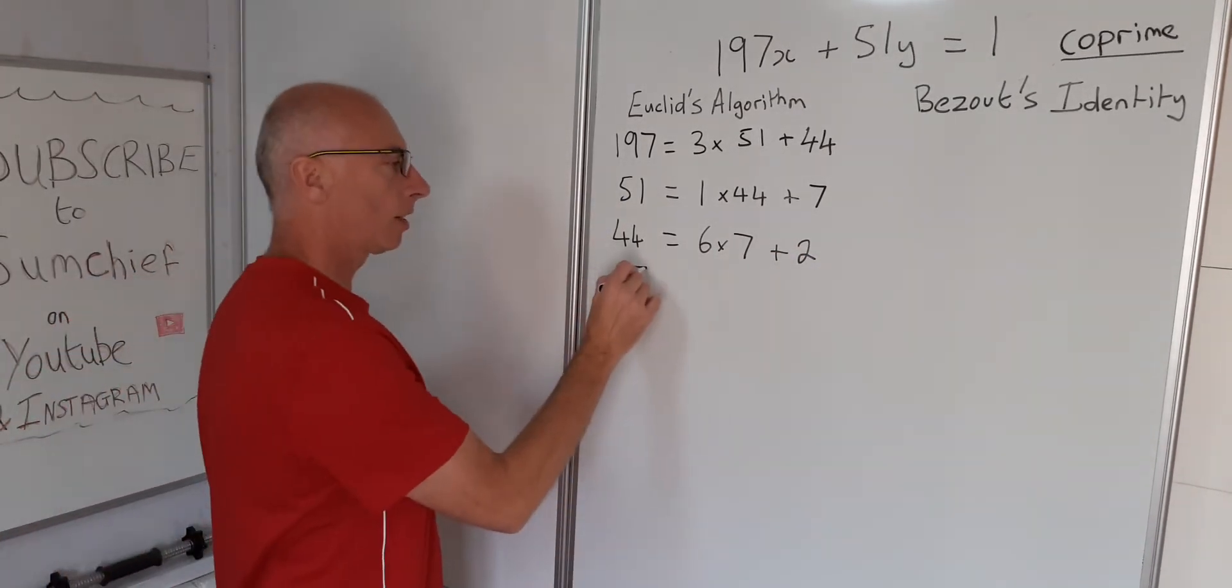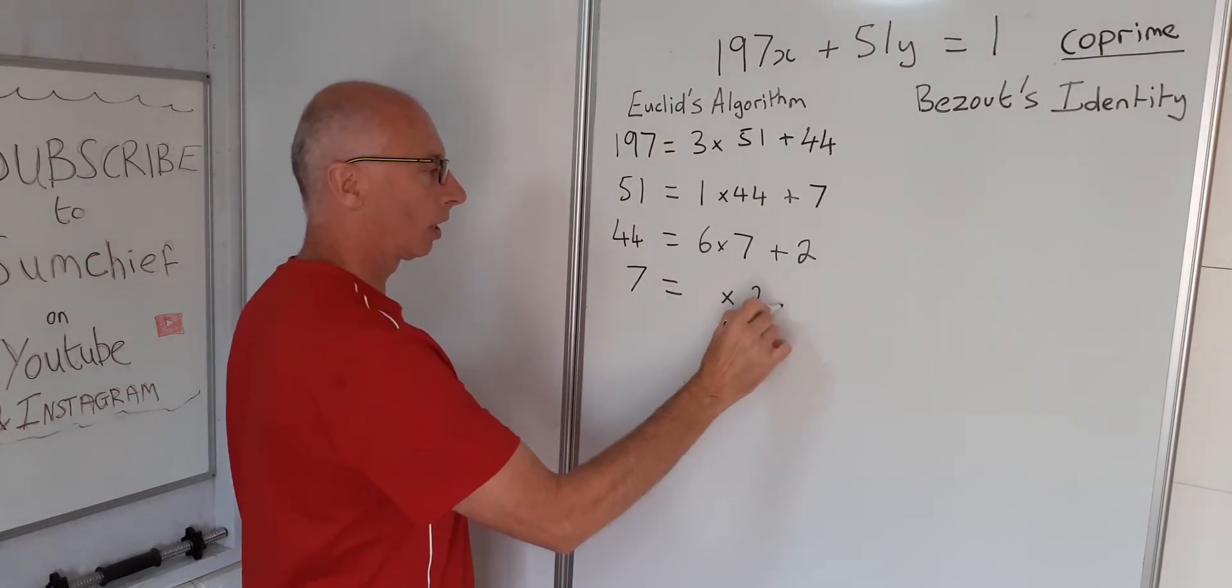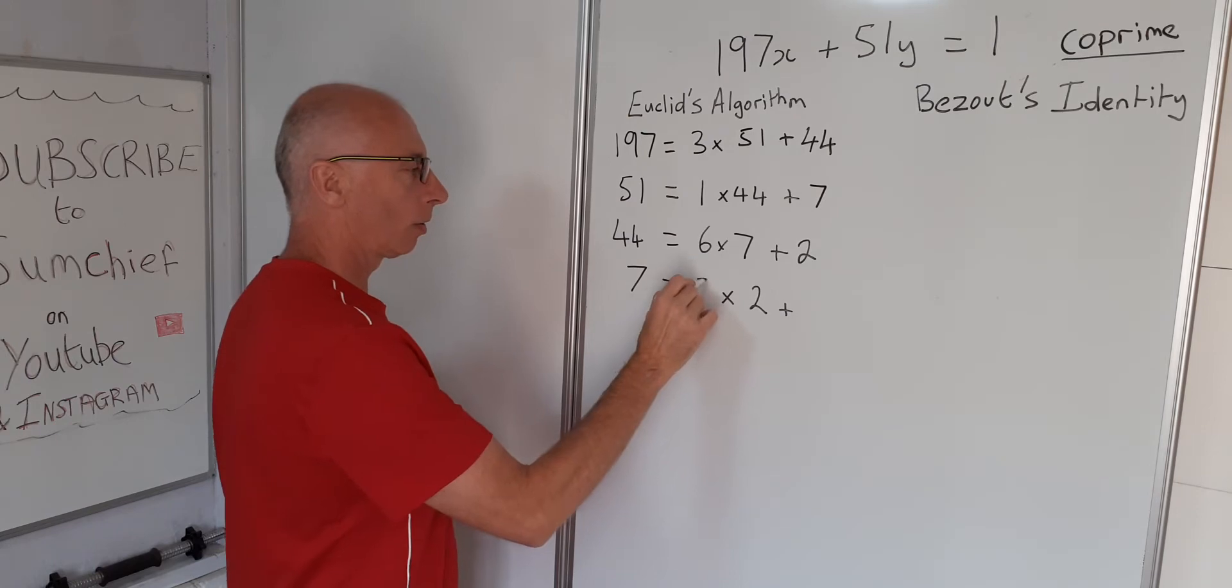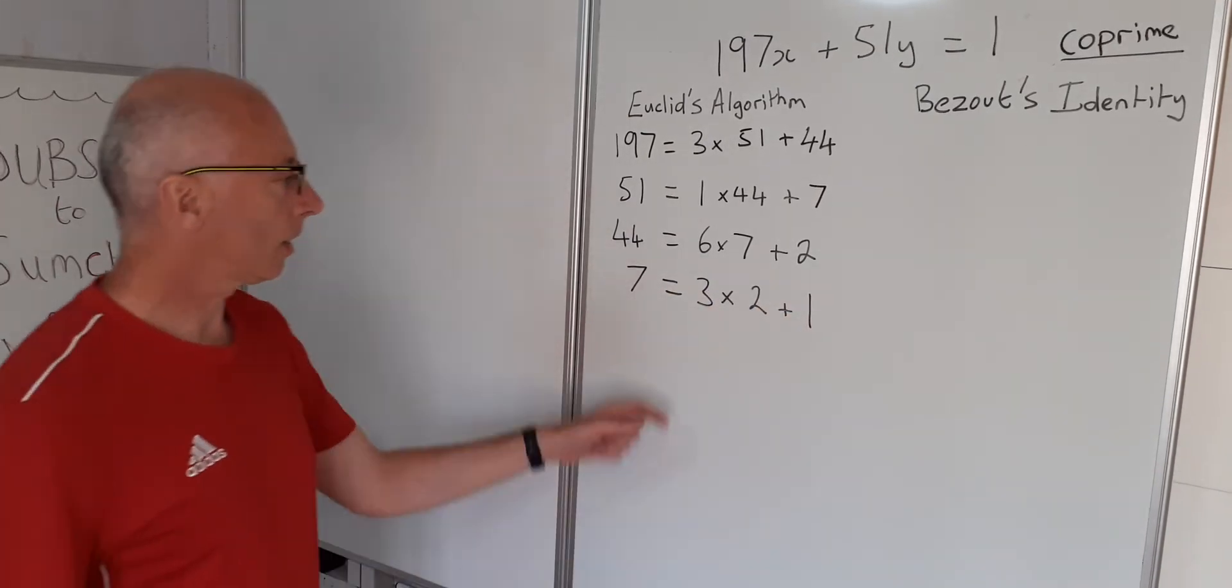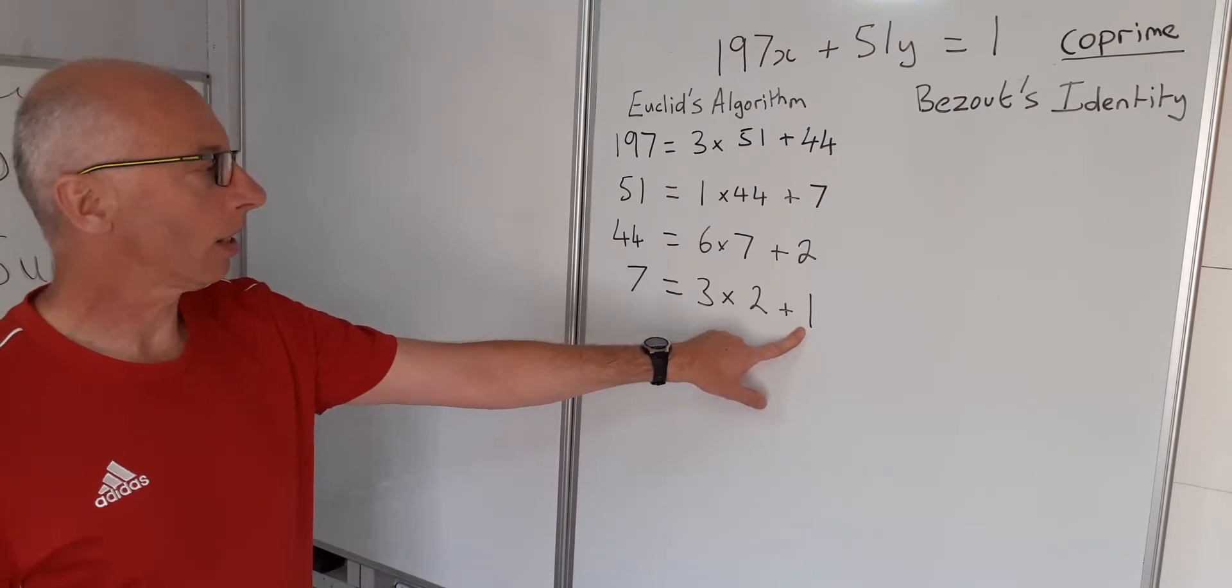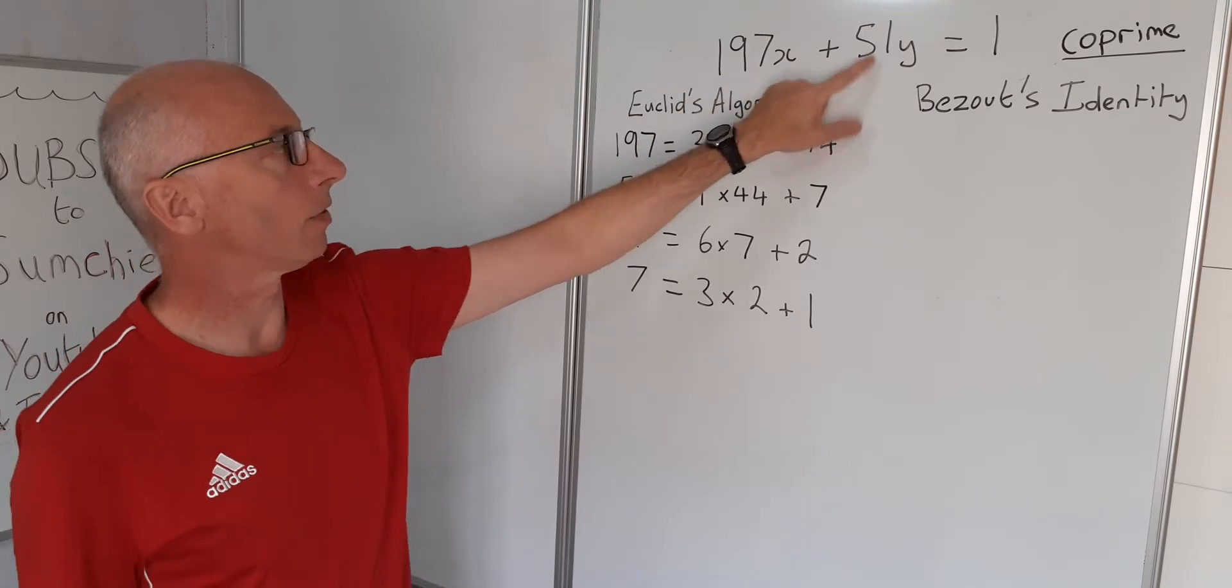Moving on again, 7 equals something times the 2 plus a remainder, or 3 times 2 is 6 plus 1, that's 7. So now when we get the 1 in the remainder, we know that we have two co-prime integers here, 197 and 51.